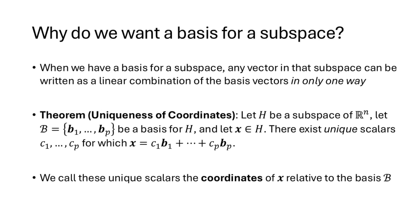Now why is it important to have a basis for a subspace? One advantage of a basis is that any vector in that subspace can be written as a linear combination of the basis vectors in only one way. This theorem says exactly that: if H is a subspace of R^n, script B is a basis for H, and x is a vector in H, then there are unique scalars c1 through cp for which x can be written as a linear combination of the b vectors. Those unique scalars are called the coordinates of x relative to the basis B.